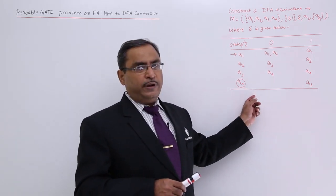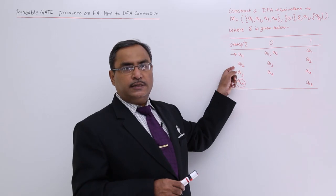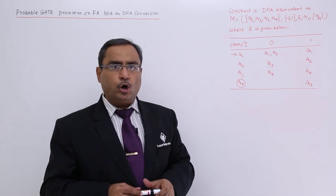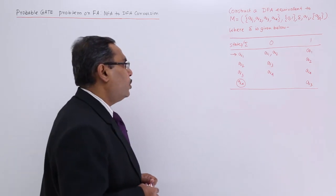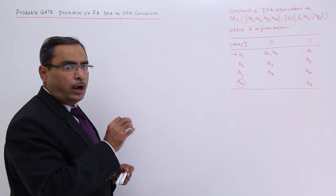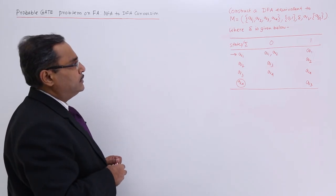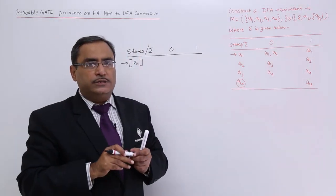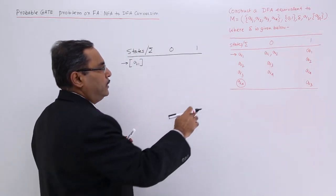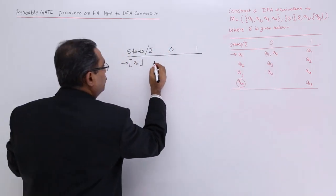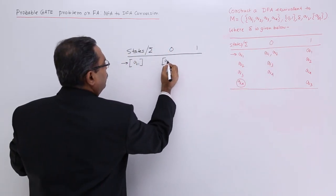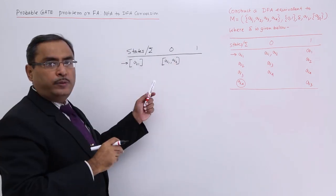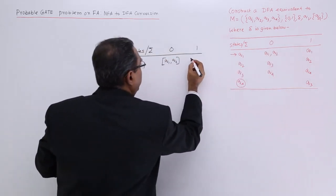If in such problems we are having more than one initial state, then in the deterministic automata we should club them and then start the determination. But that complexity is not there here — we are having only one initial state. Let me start and write the column headings. q1 is the initial state, so I have written it. q1 on input 0 will give q1 q2.